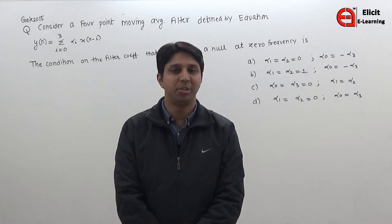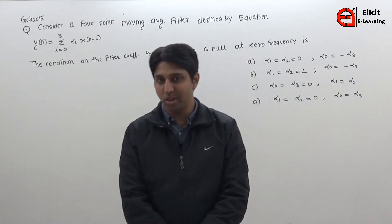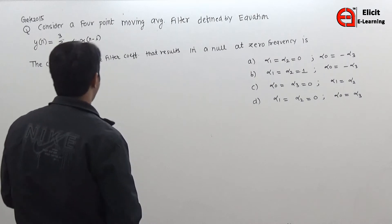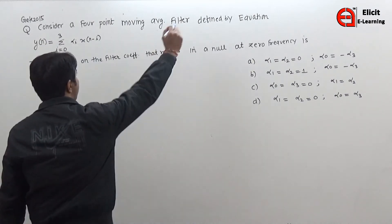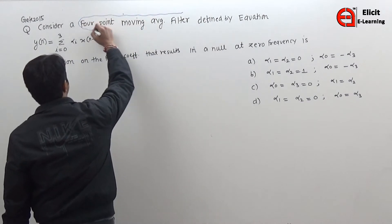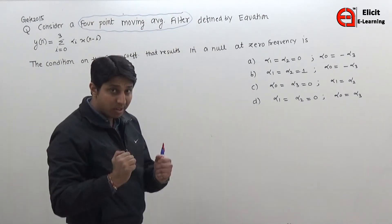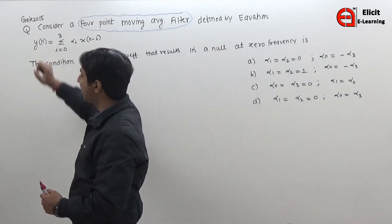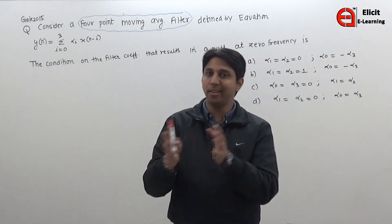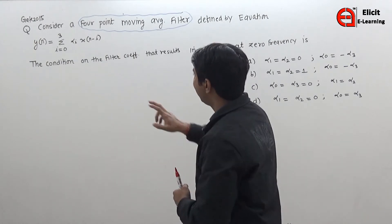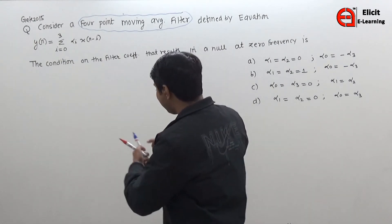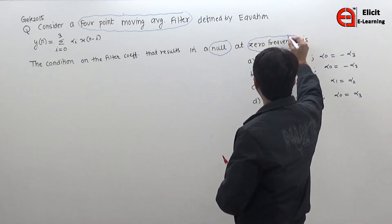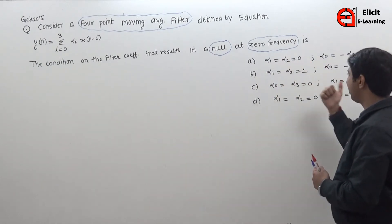Let us take the next question from the topic of digital filter. Consider a four-point moving average filter defined by an equation, where x(n) is the input and y(n) is the output. The condition on the filter coefficients that results in a null — meaning output is zero at frequency zero — involves four filter coefficients which satisfy that condition.